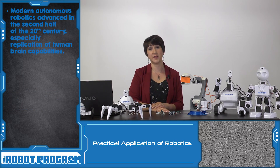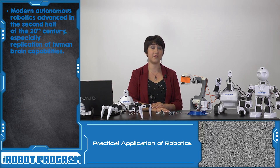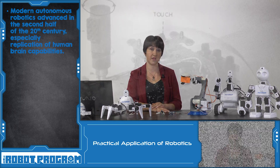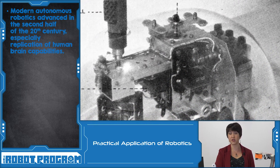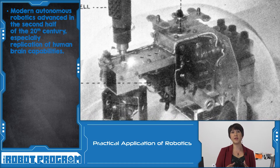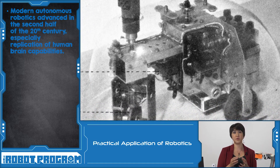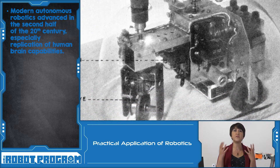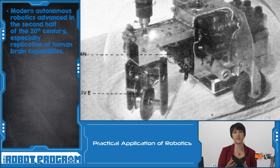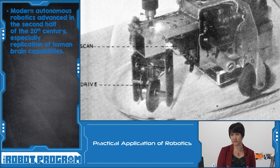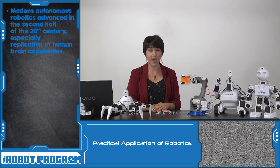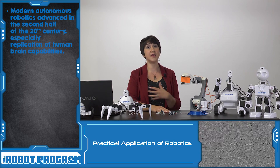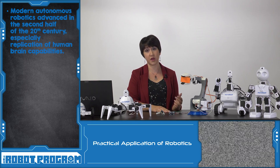Modern autonomous robotics really took off in the latter half of the 20th century. The first electronic autonomous robot was developed by William Gray Walter, and it was meant to simulate what happens with just a few brain cells and all of the different complex connections the human brain is capable of. We see that theme come up again in many robotics developments.